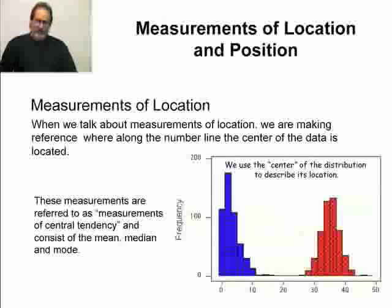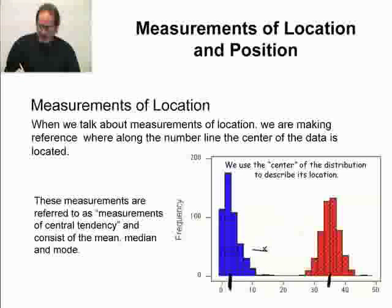Now, when we talk about measurements of location, we're making reference to where along the number line the center of the data is located. If I look at the data here, if you look at this distribution, the center is roughly here someplace. The center here is, well, how would you define the center? It's not obvious because it is not symmetric. We could pick a value over here somewhere where the center of the bulk of the data is, or because this is skewed to the right, we may think, well, maybe we need to talk a little bit over here. There's more than one way to describe the center.